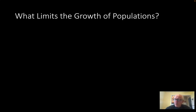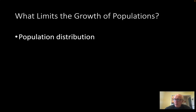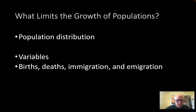What limits population growth? Distribution matters — a clustered population has a better chance of growing; a low-density distribution has a lower chance. The obvious variables for population growth or shrinkage are births and deaths, plus immigration and emigration. You add births and immigration together and subtract deaths and emigration. Scientists are increasingly paying attention as we affect the shrinking of so many other populations.